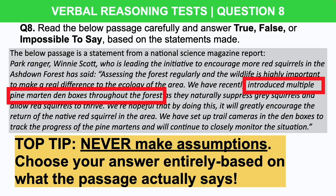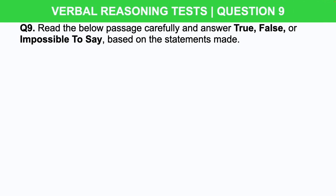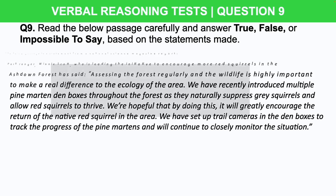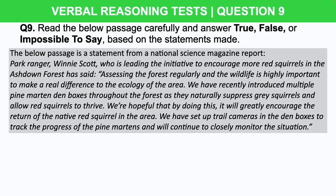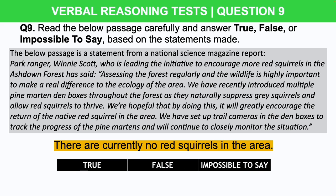I'm going to give you a few practice questions now. You should find these hopefully fairly easy, but if not — remember, never make assumptions, take your time, and just practice more of these question types to increase your speed. Question 9: read the below passage and carefully answer true, false, or impossible to say. The passage is exactly the same as before. Statement: there are currently no red squirrels in the area — true, false, or impossible to say? You have five seconds and please put your answer in the comment section below. Starting now.